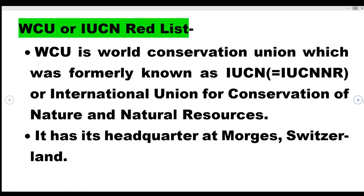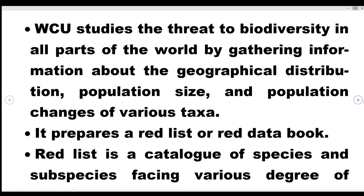Welcome back dear viewers. We are discussing Plus 2 Biology Chapter 15, that is Biodiversity and Conservation. Today's video pertains to WCU or IUCN Red List. WCU is World Conservation Union, which was formerly known as IUCN, that is International Union for Conservation of Nature and Natural Resources. WCU has its headquarters in Morges, Switzerland, and its main work is to study threats to biodiversity.